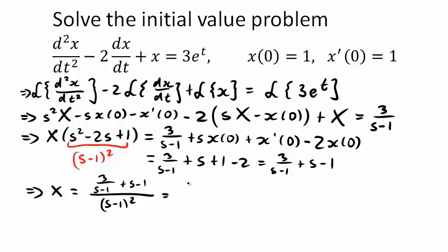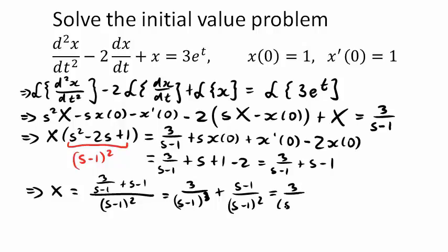We can write the first term as 3 over (s - 1)³, and splitting the second part, plus (s - 1) over (s - 1)². The first part stays as 3 over (s - 1)³, and the second part cancels nicely to give 1 over (s - 1).